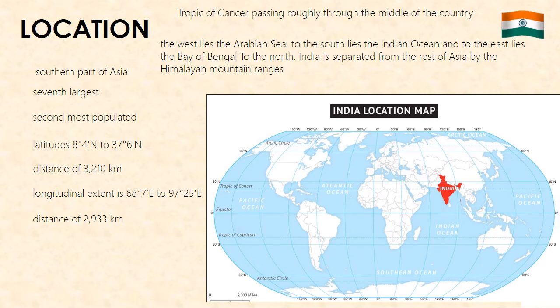Its longitudinal extent is 68°7' east to 97°25' east, covering a distance of 2,933 km. India lies entirely in the northern hemisphere with the Tropic of Cancer passing roughly through the middle of the country.